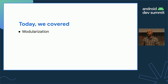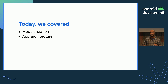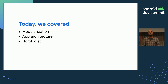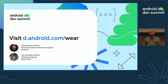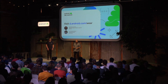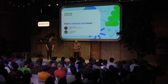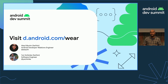We covered a lot in the last 20 minutes, so let's recap. Starting with modularization, we recommend treating your Wear and mobile app modules as hierarchical siblings and sharing underlying modules. We reiterated that the MAD architecture guidance applies to Wear apps — if you've been following modern Android development, you can use everything you've learned. Finally, we introduced tools in Horologist that help you build using the concepts and principles shared today. If you take away one thing from this session, let it be building blocks — modularize your code base to facilitate reuse of code not just across features, but across different form factors. Thank you.